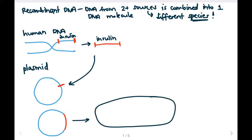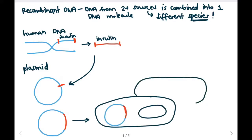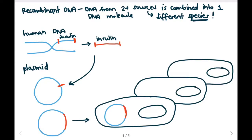Here is our bacterial cell. It will have the normal bacterial chromosome, but it also has the plasmid. We can then replicate the bacterial cell multiple times to produce multiple copies of the plasmid with the insulin gene.